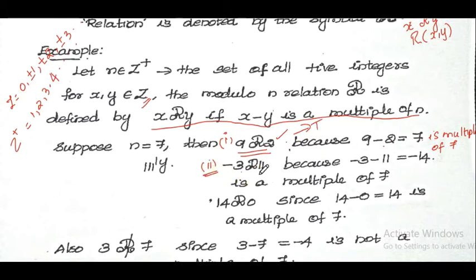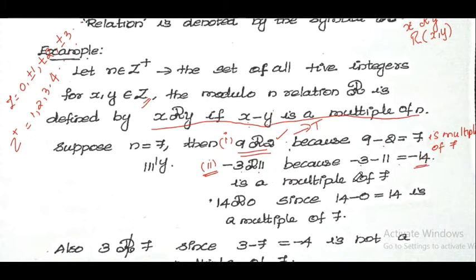Second example: check whether minus 3 is related to 11. We compute: minus 3 minus 11 is equal to minus 14. Minus 14 is a multiple of 7. So we can say that this relation is also true.